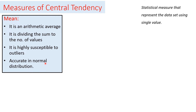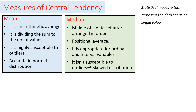If the data is skewed, the mean cannot accurately represent the data set. The median is the middle value of the data set after arranging values in ascending or descending order. It is a positional average, appropriate for ordinal and interval variables, and is not susceptible to outliers because extreme values do not affect its position. It is suitable for skewed distributions.